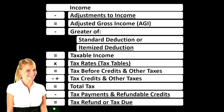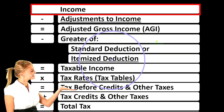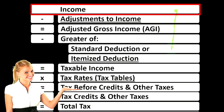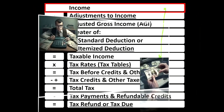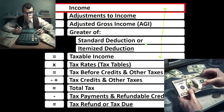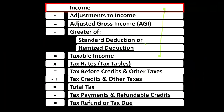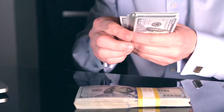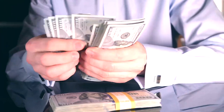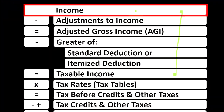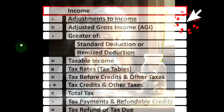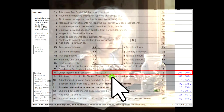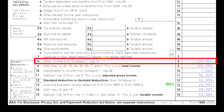Looking at the income tax formula focused on line one income — remember the first half of the income tax formula is essentially an income statement, with other forms and schedules flowing into these line items. One being the Schedule C, which has business income minus business expenses, with net business income flowing into Form 1040 via Schedule One, then into page one, line number eight.